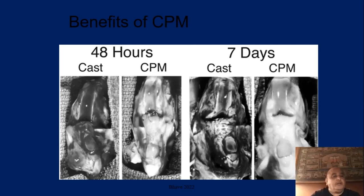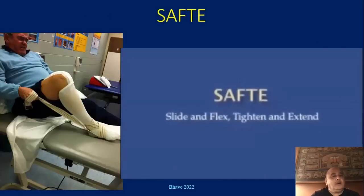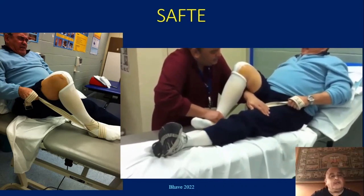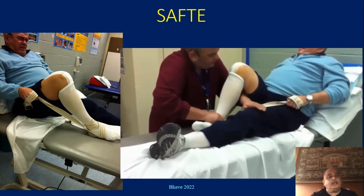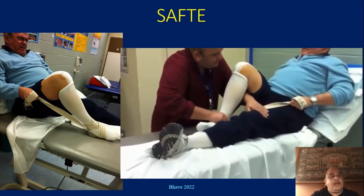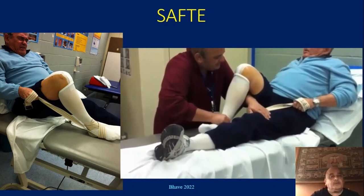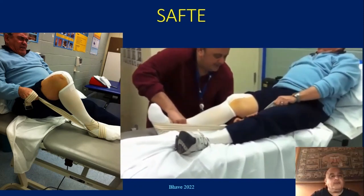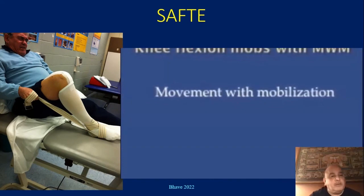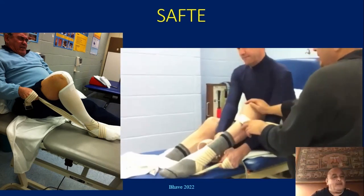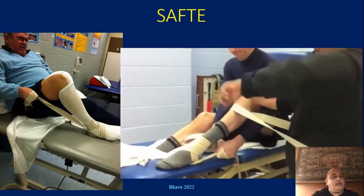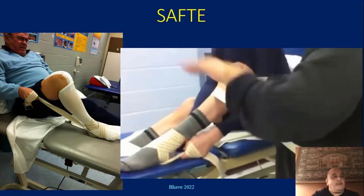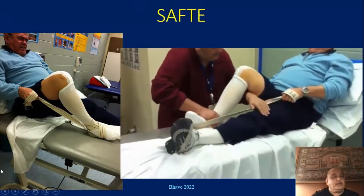My favorite exercise for all knee patients is called SAFE - Slide And Flex, then tighten and Extend. We start it very early on and take patients within 10 to 12 days of surgery - staples still on - through the full arc of motion. As the patient finishes flexion range of motion, he pushes down all the way by tightening the quadricep muscle, pushing against my hand. In one exercise you get multiple benefits. Every total knee patient does 100 SAFE exercises every day.